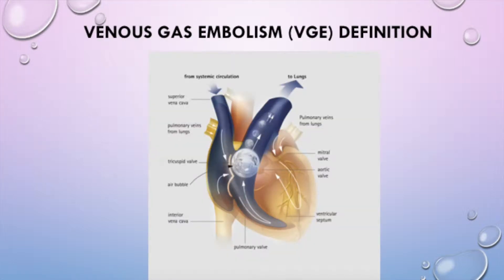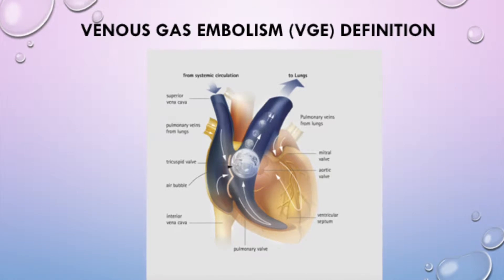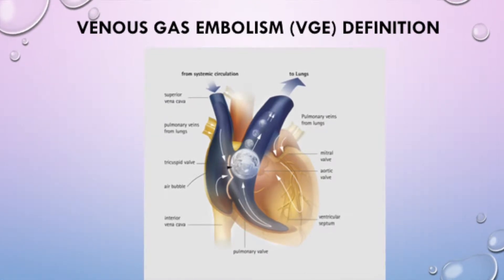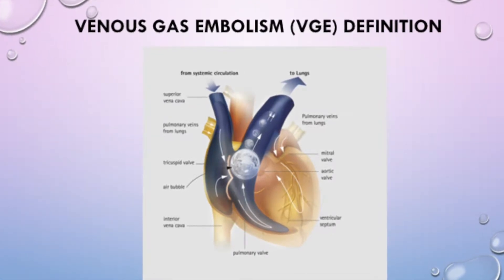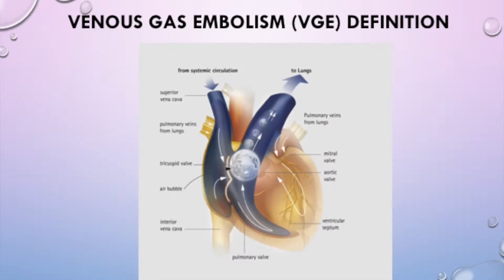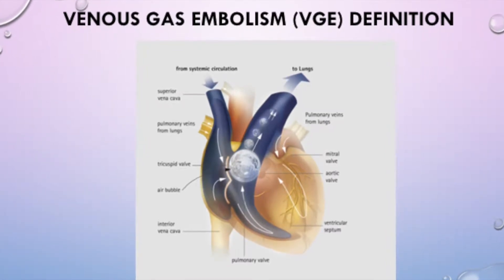A VGE is defined as the entrainment of a gas, most commonly air or CO2, into venous circulation that ultimately travels to the right side of the heart or pulmonary vessels.